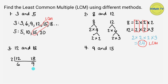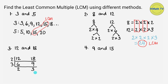Next, let's divide 6 and 9. What number can divide both 6 and 9? They are both divisible by 3. 6 divided by 3 equals 2, and 9 divided by 3 equals 3. The quotients 2 and 3 are prime numbers, so we will stop dividing now because their only common factor is 1.